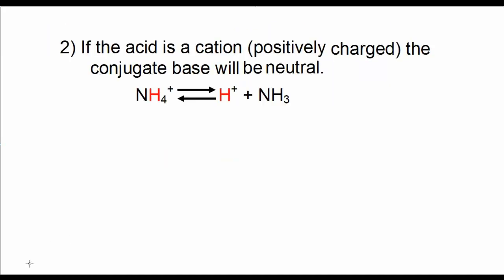Then there's the case if the acid is a cation, a positively charged species. If this is the case, the conjugate base will be neutral, because what happens is this positively charged species loses a positive hydrogen atom.